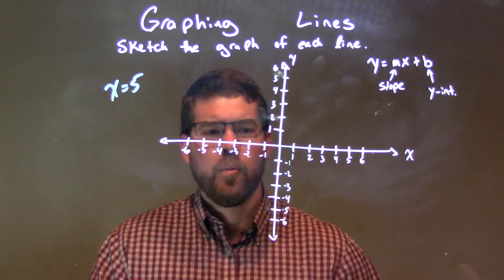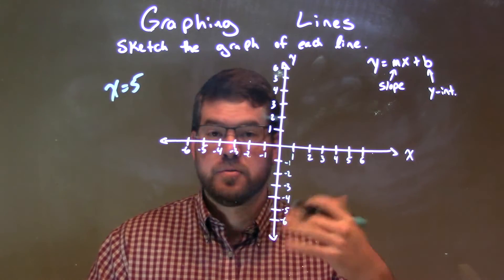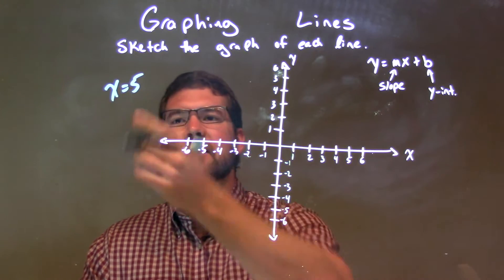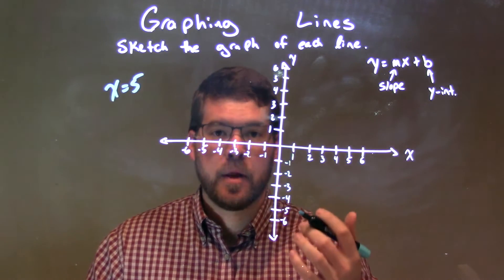We've seen before when y equals something, we have just y equal no x value. We have a horizontal line. When x equals a number, we have a vertical line.